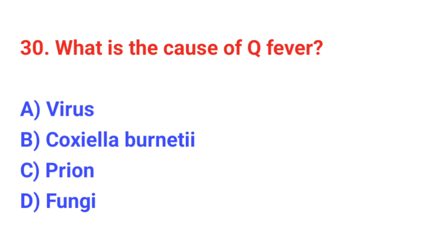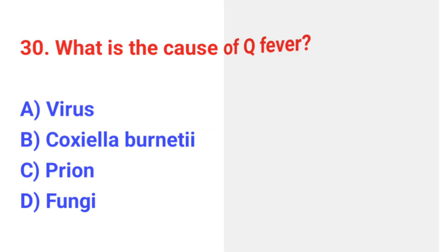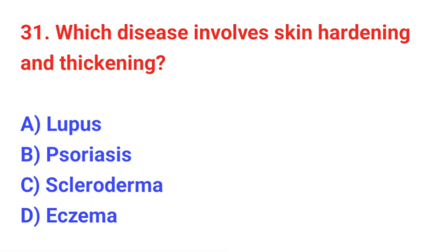Question number 30: What is the cause of Q fever? The correct answer is B: Coxiella burnetii. Question number 31: What disease involves skin hardening and thickening? The correct answer is C: Scleroderma.